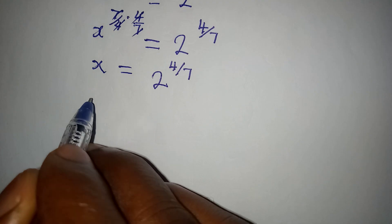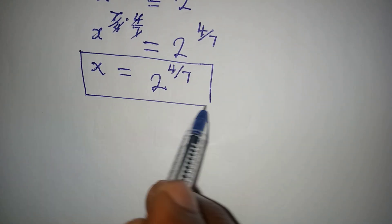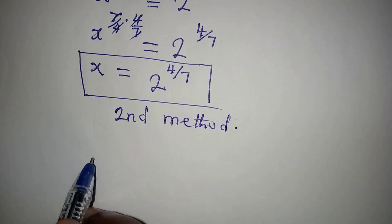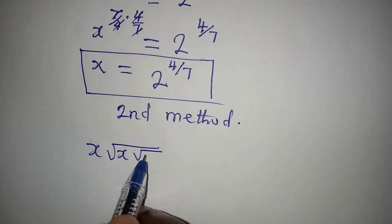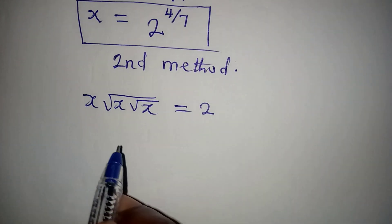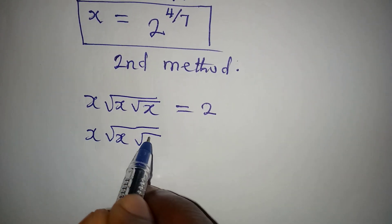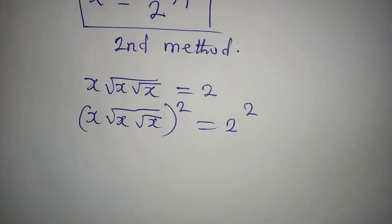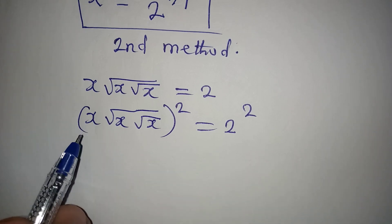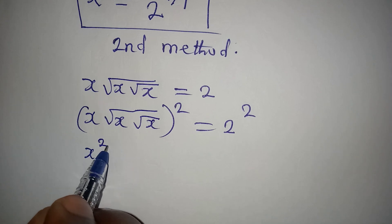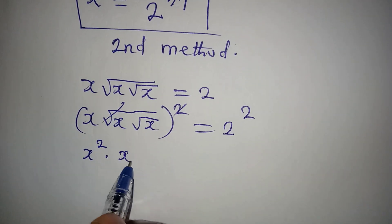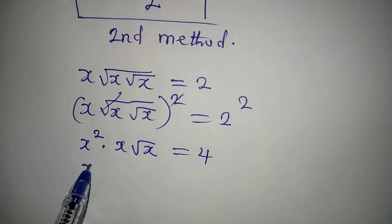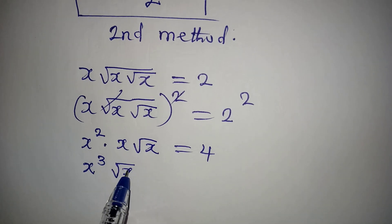Now let's do this a second way. The equation is x times the square root of x times the square root of x equal to 2. Square both sides, so the left side is squared and the right side becomes 2 squared, which is 4. We get x squared times x times the square root of x equal to 4, which simplifies to x to the power of 3 times the square root of x equal to 4.